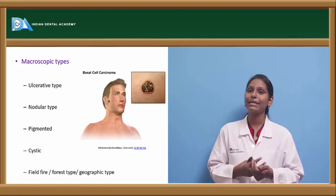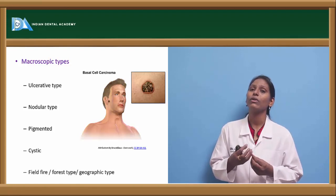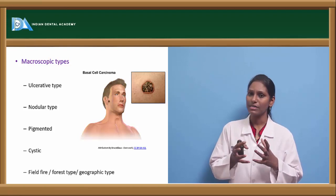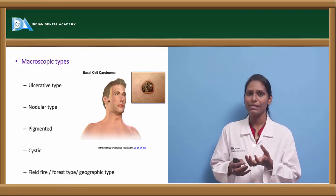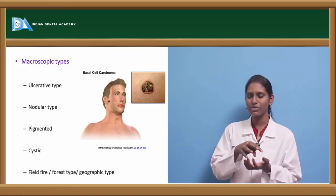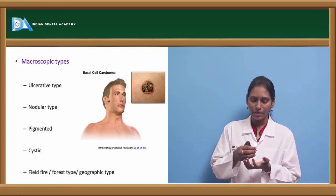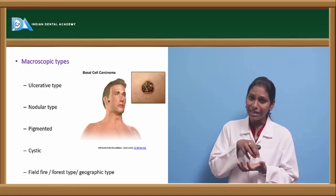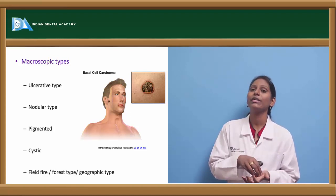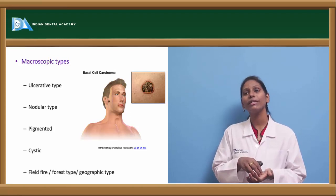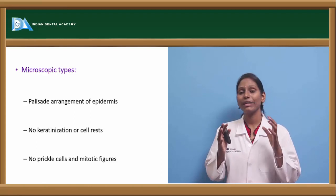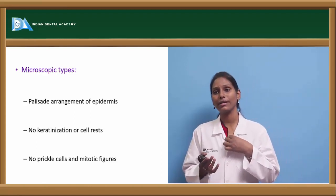We have the pigmented type of basal cell carcinoma due to more amount of melanin within it. We also have the field fire or forest fire type — why field fire? Because its appearance is like that. We have a central healing ulcer with pale granulation tissue and a nice advancing edge surrounding the central ulcer. This is also called the geographic type of basal cell carcinoma.